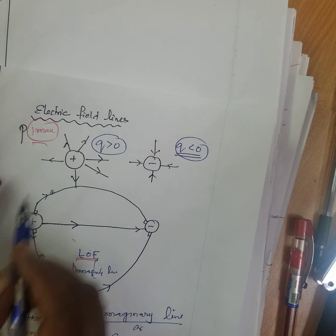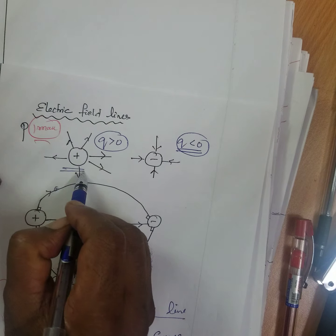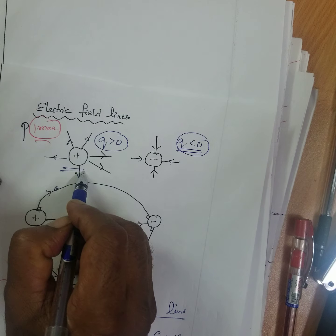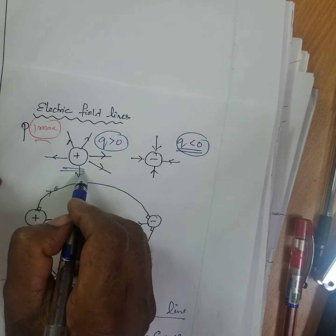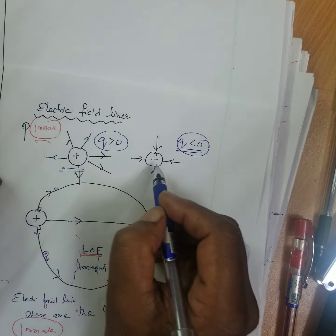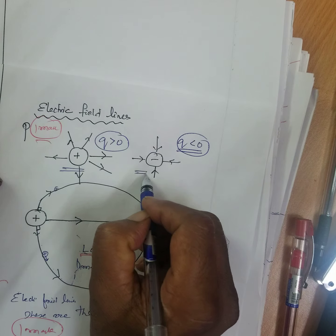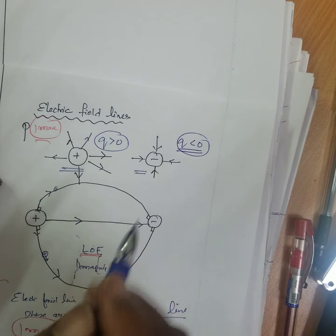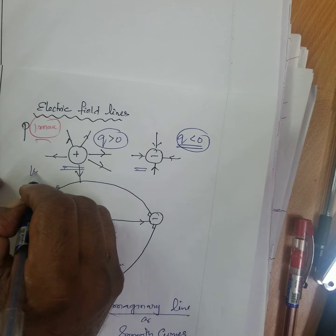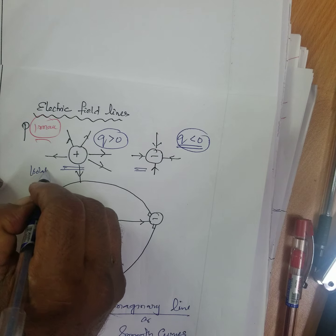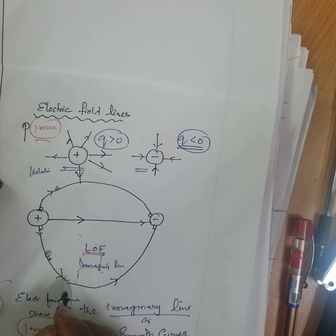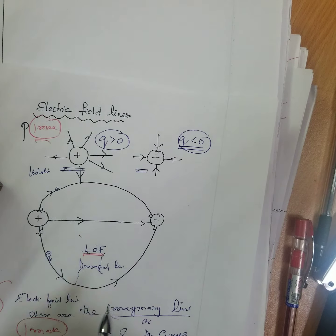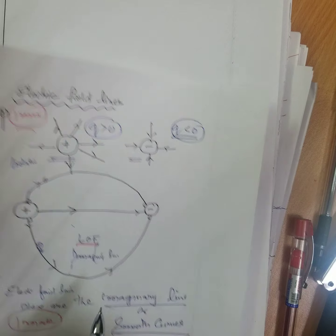You have to sketch and explain the electric lines of force for q greater than zero and q less than zero. This is called an isolated positive charge, and this is an isolated negative charge.